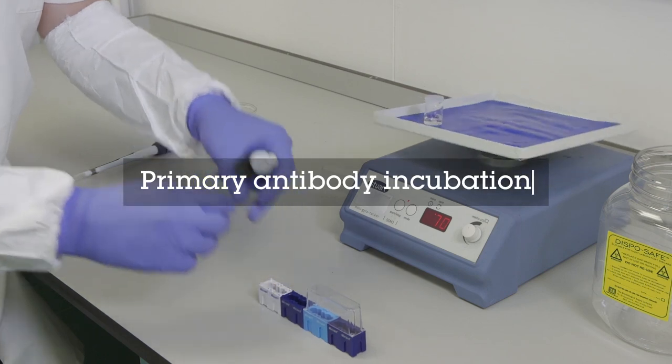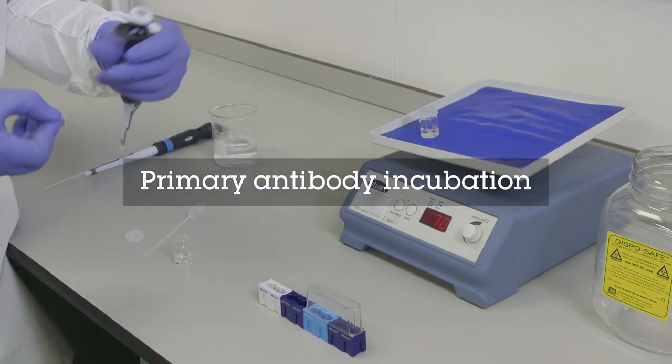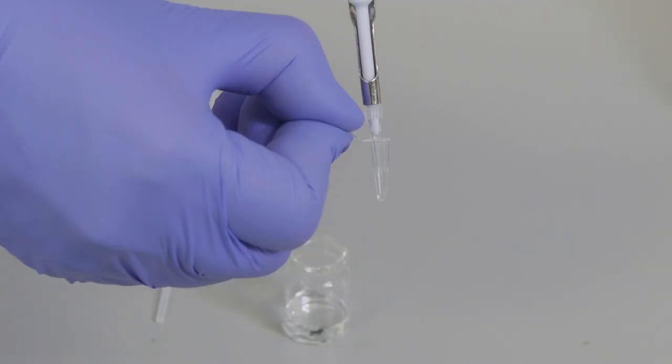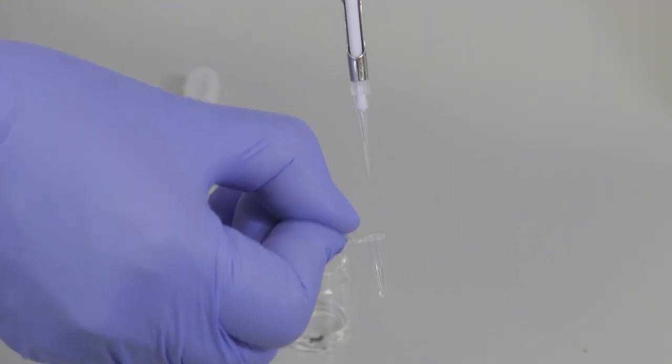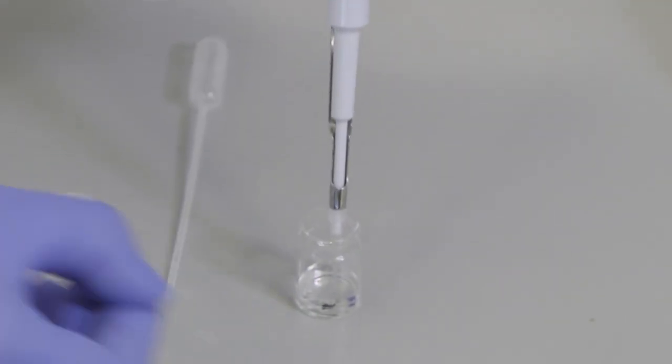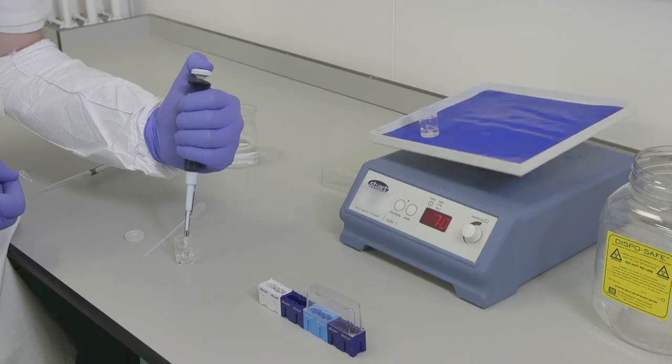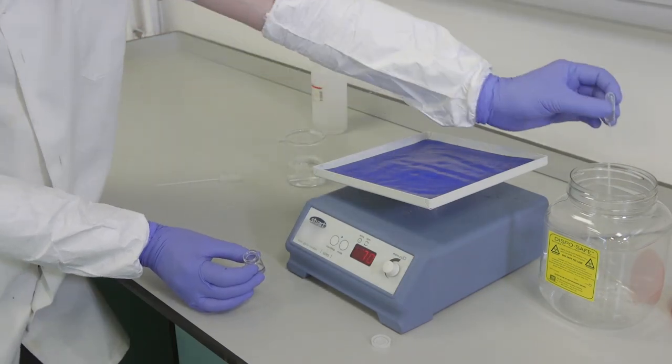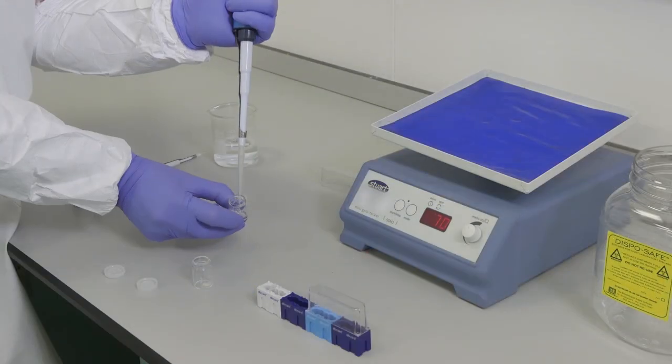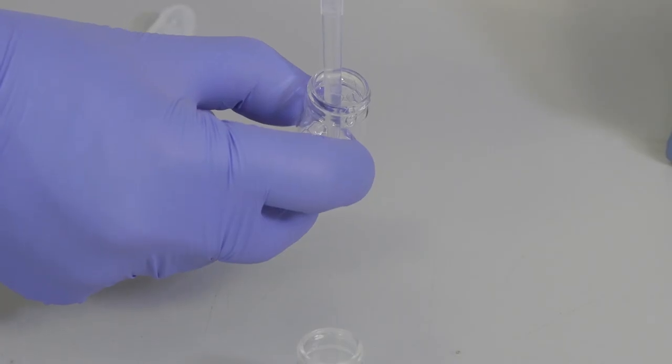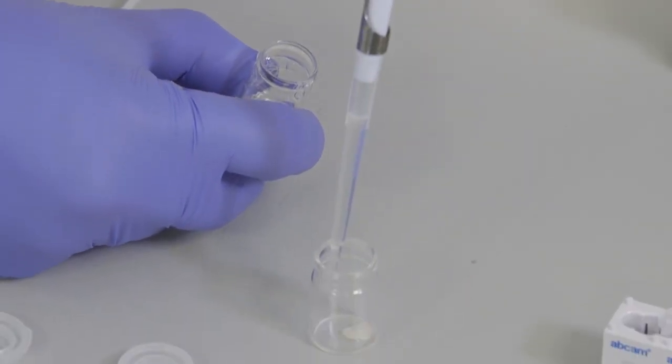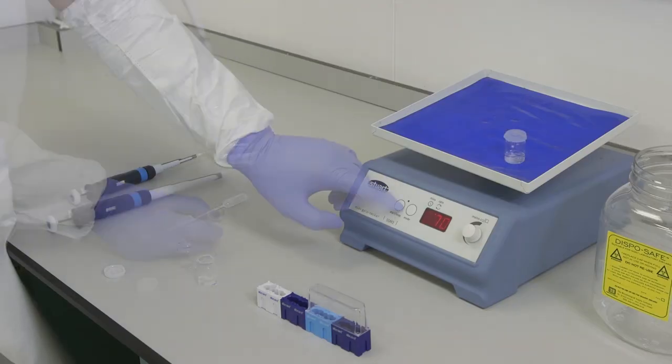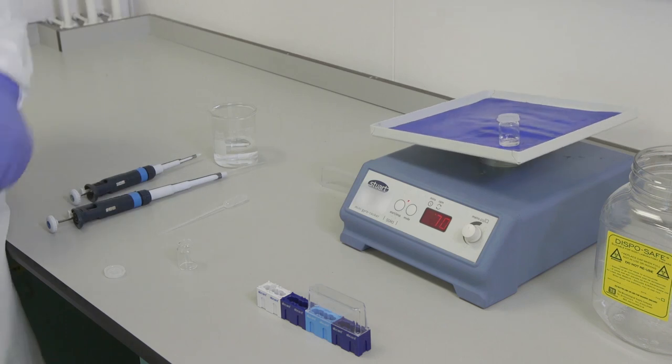Prepare the primary antibody solution by diluting the primary antibody in the Tris Triton solution to the correct dilution factor. A good starting point is the guideline provided by Abcam with the product, but it is recommended to optimize this for each antibody used. Remove the blocking solution, do not wash, and add the primary antibody solution to the brain slice. Leave it to incubate overnight under agitation at 4 degrees C.